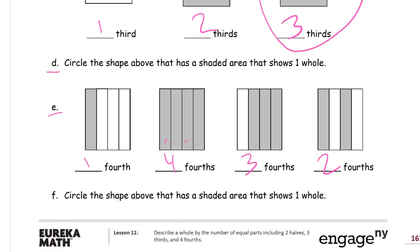And then again, circle the shape that has a shaded area that shows the whole thing shaded in, one whole. That's the one right there, four fourths.